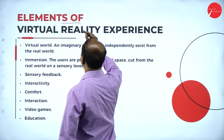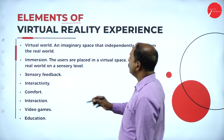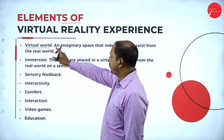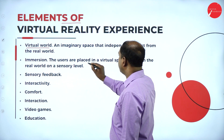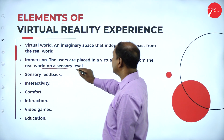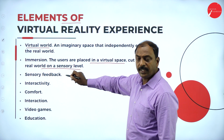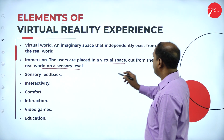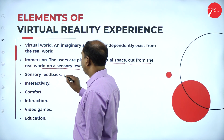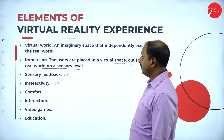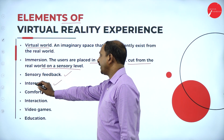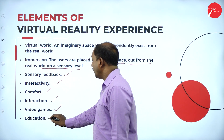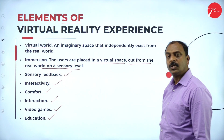The different elements of a virtual reality experience are: first, virtual world — the computer generated environment that VR takes us to. Second, immersion — the user is placed in a virtual space, cut off from the real world. Third, sensory feedback. Fourth, interactivity — once in the virtual world, you can interact with the objects available there. Other elements include comfort, interaction, video games, and education.